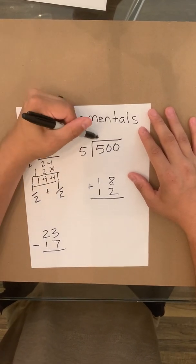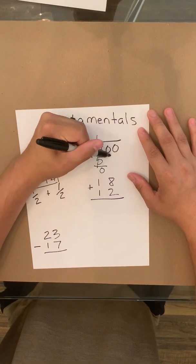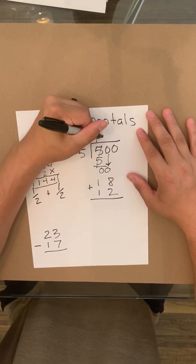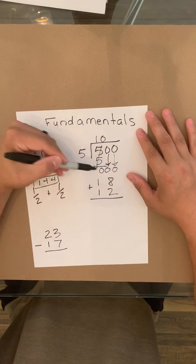Next we're going to do division. 5 goes into 5 one time, put it over here, subtract it, it just makes it 0. Bring down the next 0. 5 can't go into 0 any times, and then you'll bring over the next one.